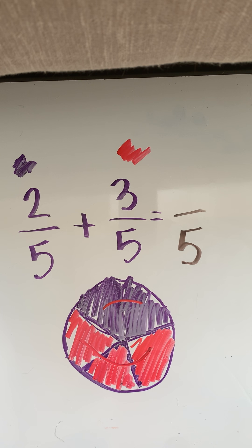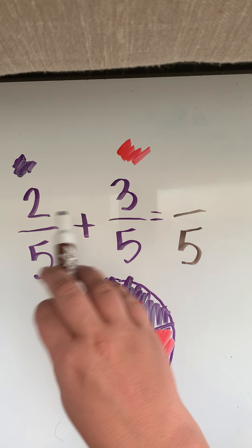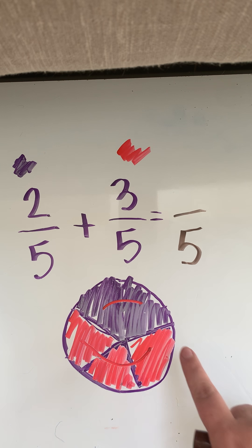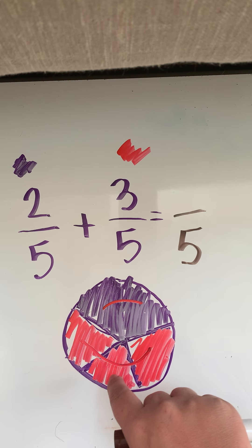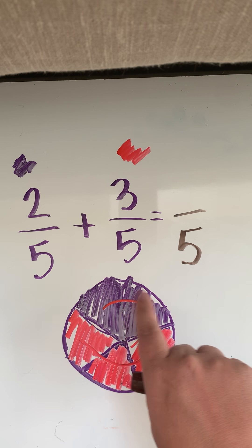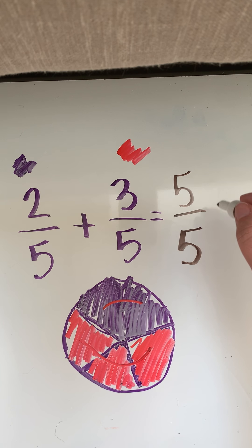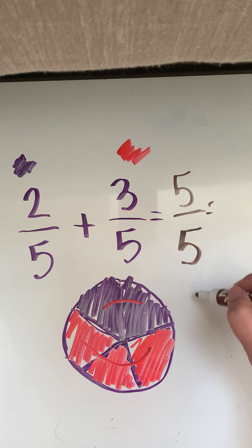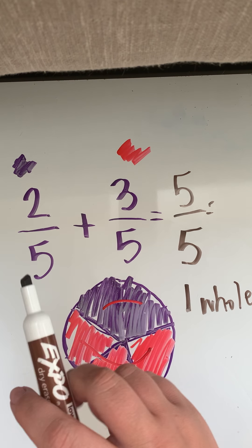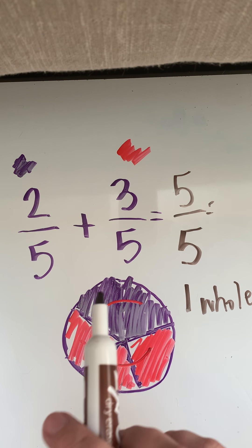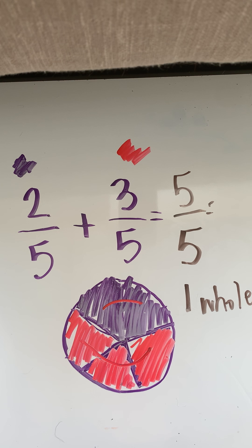Now my numerator is going to change because I did add my two slices plus my three slices and I got how many slices colored in in all? Five. Good job. And remember I taught you that if you have a fraction that has the same numerator as the denominator, that also equals one whole. Now you are not going to have to add fractions like this on your test tomorrow, but I want you to be aware of it because next year in fourth grade, you're going to be adding and subtracting fractions just like this and you're going to have a little bit of a head start.